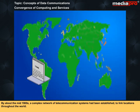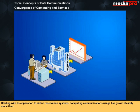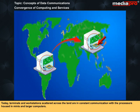By about the mid-1900s, a complex network of telecommunication systems had been established to link locations throughout the world. Although preliminary attempts were being made to converge communications concepts with computing, it was not until the late 1950s that the computer communications linkage gathered momentum. Starting with its application to airline reservation systems, computing communications usage has grown steadily. Today, terminals and workstations scattered across the land are in constant communication with the processors housed in minis and larger computers.